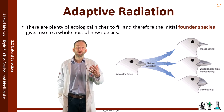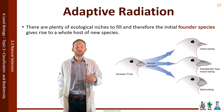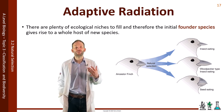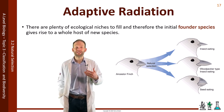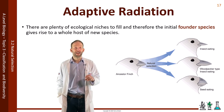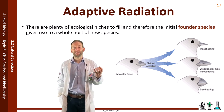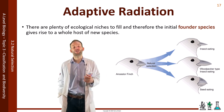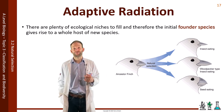A good example of adaptive radiation is Darwin's finches on the Galapagos Islands. They all evolved from one species of finch that arrived at the islands, and each finch then specifically adapted its beak through natural selection to eat the type of food found on their particular island.